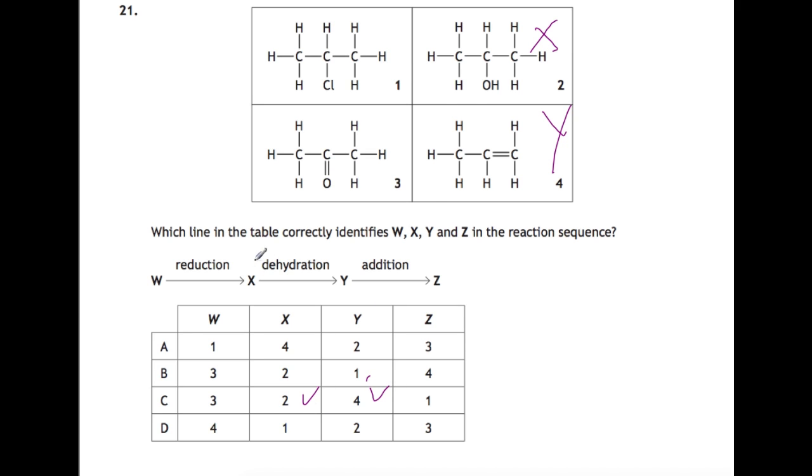And to form X we had a reduction. So reduction means that we must have had a ketone. So this must be W, which also fits. And then finally when we're adding on, we're adding something on to the double bond, and it happens to be HCl that we're adding. So this one must be Z, and that fits as well. So that's C as our answer.